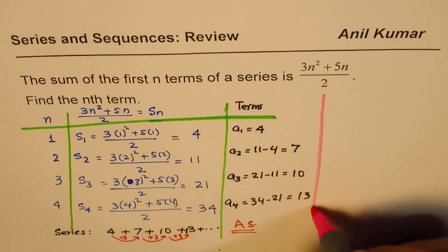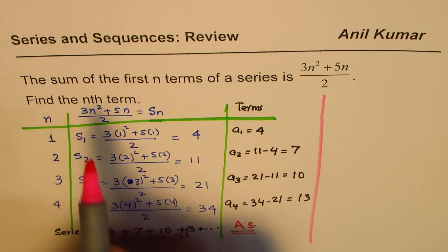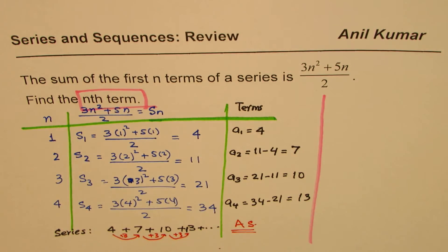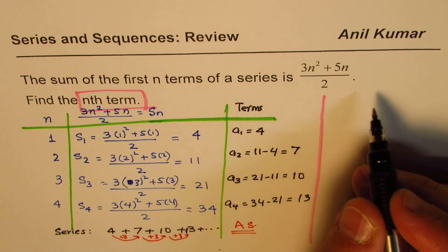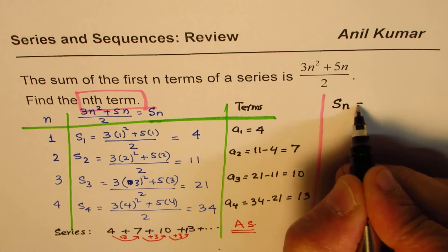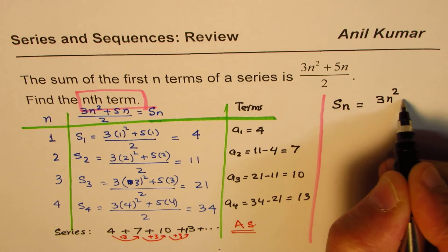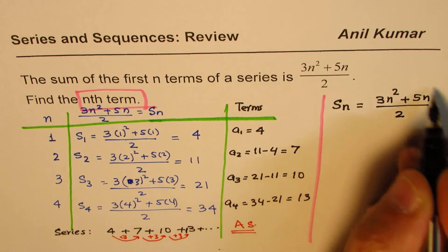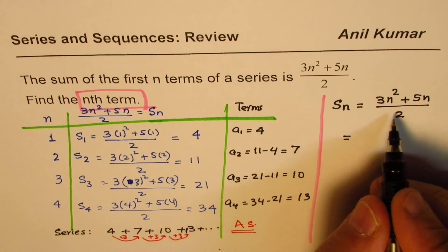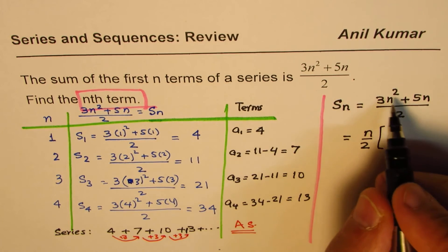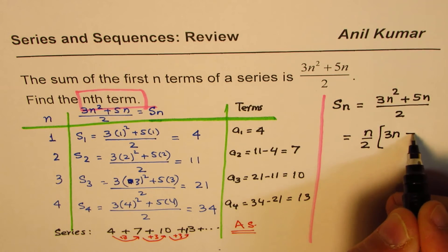The question asks us to find the nth term. We have confirmed this is an arithmetic series, so now we need to find the nth term. The given sum is 3n squared plus 5n divided by 2. Let us rearrange this: we take n over 2 as a common factor, writing it as n over 2 times (3n plus 5).